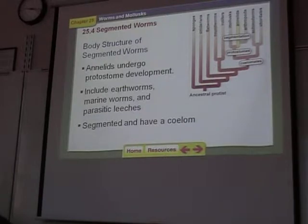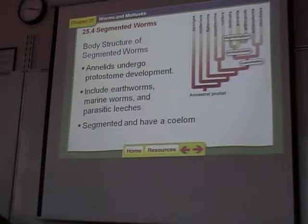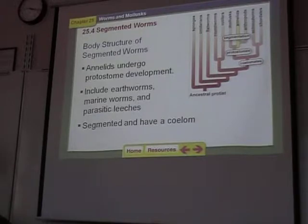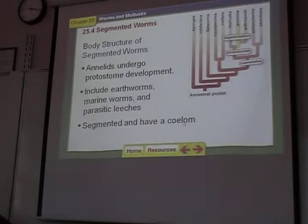So what are we talking about here? Earthworms, marine worms — which you're probably not very familiar with — and leeches. We'll talk about all these today. They're true coelomates; they have a coelom, which is a body cavity. They are segmented.